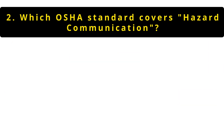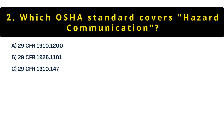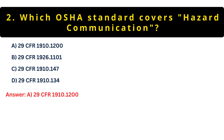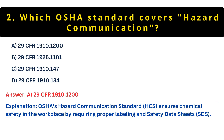Question 2: Which OSHA standard covers hazard communication? Option A: 29 CFR 1910.1200. Option B: 29 CFR 1926.1101. Option C: 29 CFR 1910.147. Option D: 29 CFR 1910.134. The right answer is A — 29 CFR 1910.1200. This is OSHA's Hazard Communication Standard, or HCS. It ensures chemical safety by requiring proper labels and safety data sheets, so workers know the risks of the chemicals they handle.